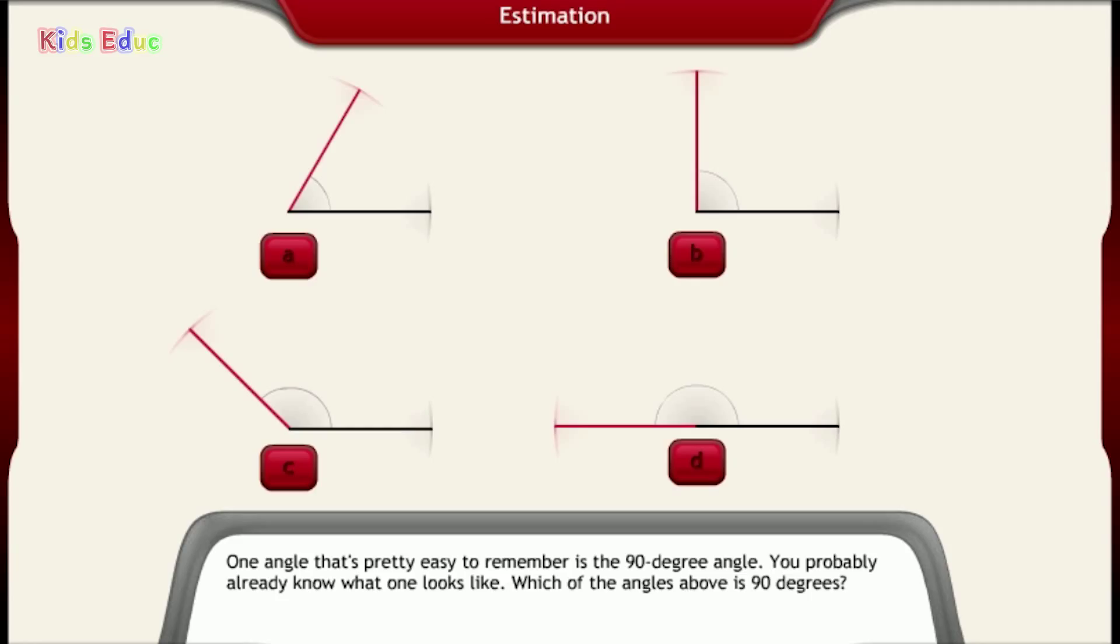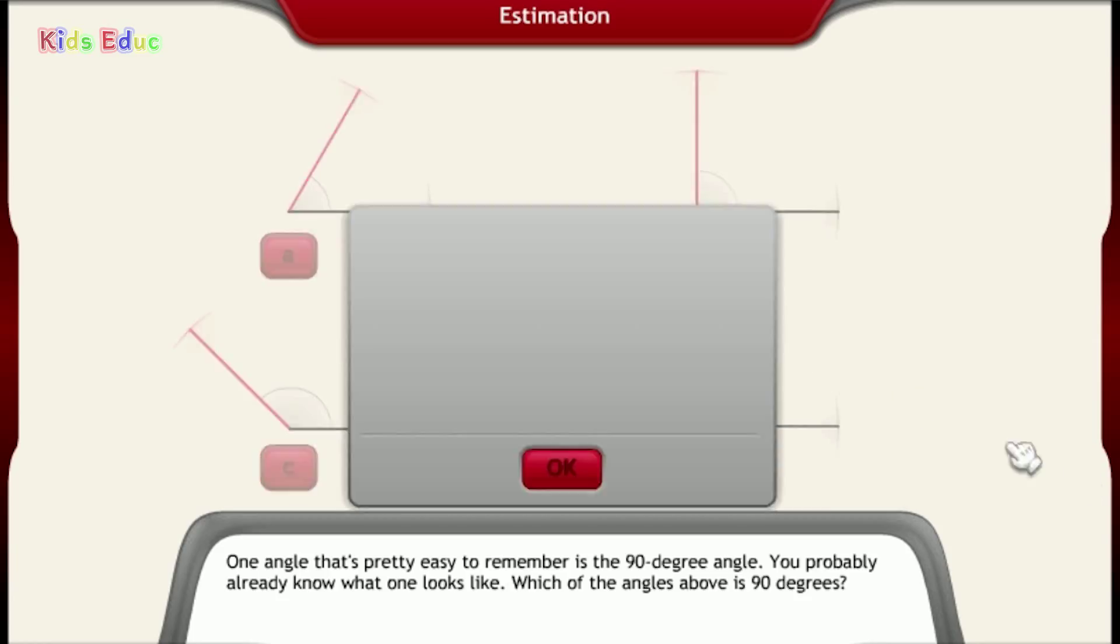Which of the angles above is 90 degrees? B. That's it.